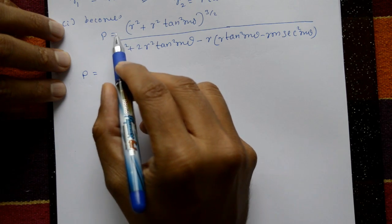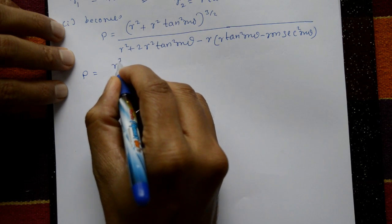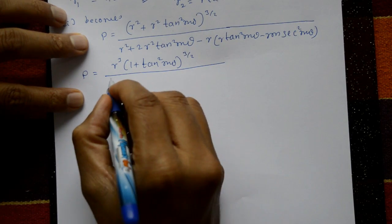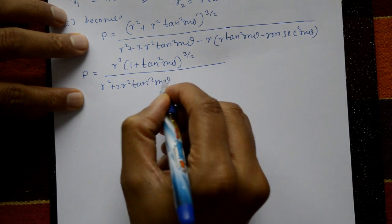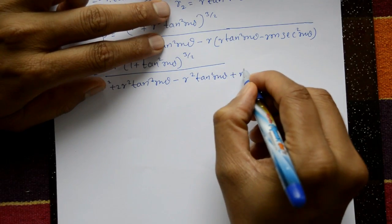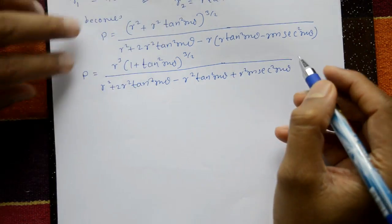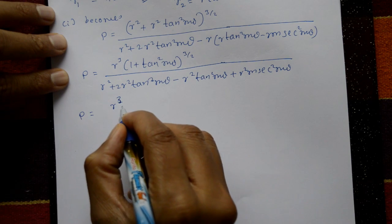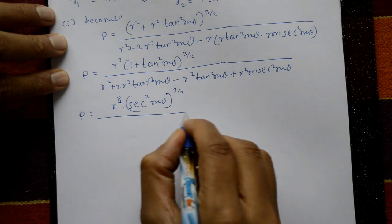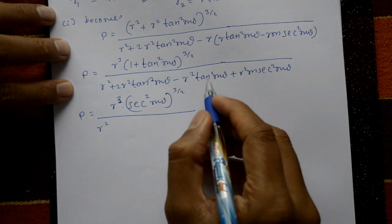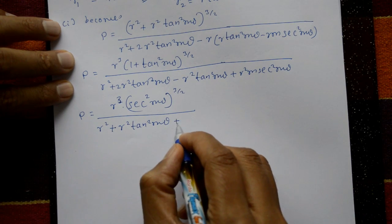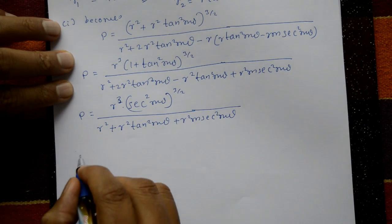Taking r² as common from the numerator bracket: numerator = r²·[1 + tan²(mθ)]^(3/2) = r²·[sec²(mθ)]^(3/2) = r²·sec³(mθ). Denominator simplifies: r²(1 + tan²(mθ)) + r²·m·sec²(mθ) = r²·sec²(mθ) + r²·m·sec²(mθ) = r²·sec²(mθ)·(1 + m).